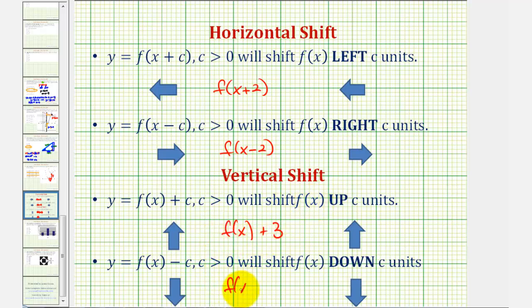Versus if we had f of x minus three, this would shift f of x down three units. But again, our shift is up.